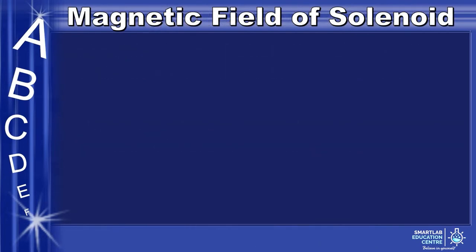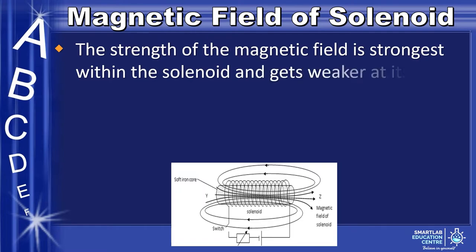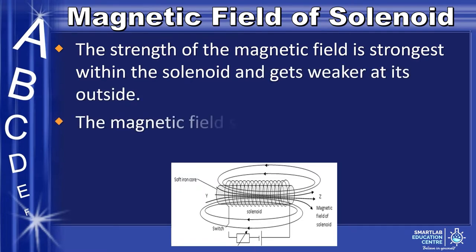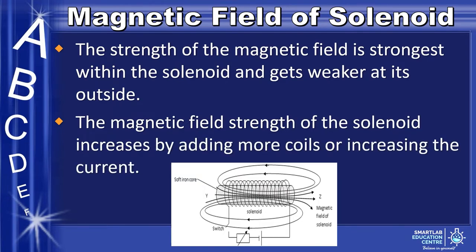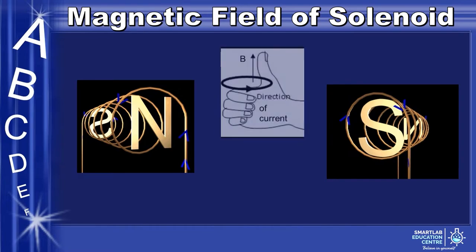Now, let us take a look at solenoids. Here is a diagram of a solenoid and its magnetic field. When a current passes through the solenoid, it acts as a temporary magnet with north and south poles. Notice that the magnetic field is concentrated inside the solenoid as compared to outside. The strength of the magnetic field is strongest within the solenoid and gets weaker outside. The magnetic field strength of the solenoid increases by adding more coils or increasing the current. We can determine the position of the north and south poles using the right-hand rule. The direction of the thumb indicates the position of the north pole, and the curl of the fingers represents the direction of the current in the solenoid.